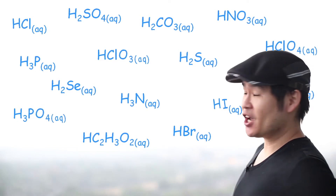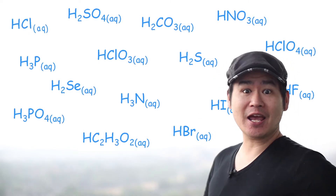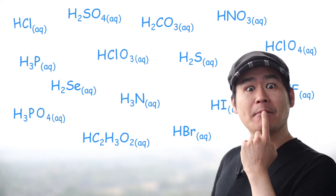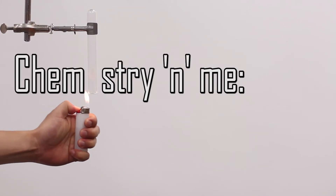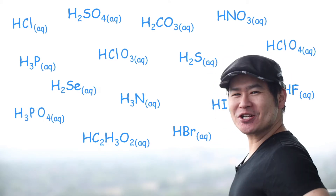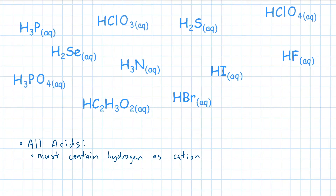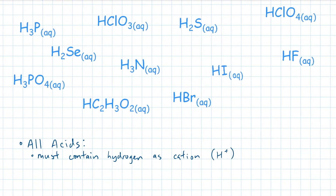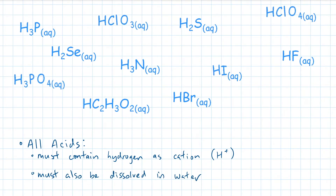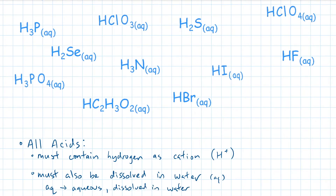What other pattern do you see? That's right, they all end in AQ. In general, all of these chemical compounds are classified as acids. All acids must contain hydrogen as its cation, followed by one or more nonmetals in its anion. Also, all these compounds must be dissolved in water — that's why you see the letters AQ in the formula, written in subscript. AQ means aqueous, or dissolved in water.